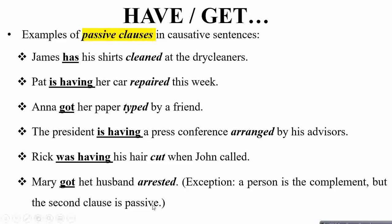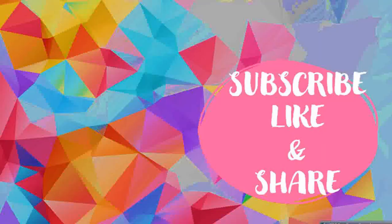Just to give you clarity — when 'have' or 'get' is used in active voice the simple or infinitive form follows, and in passive voice the past participle follows. I hope this all makes sense. If it did, please subscribe to my channel, like and share. Thanks for watching this video.